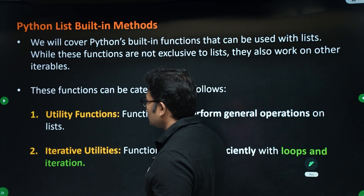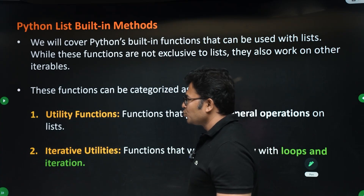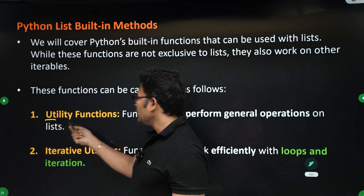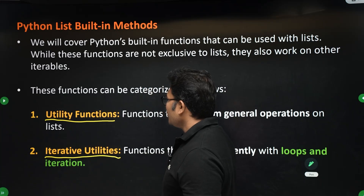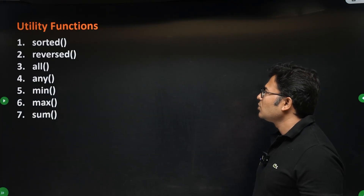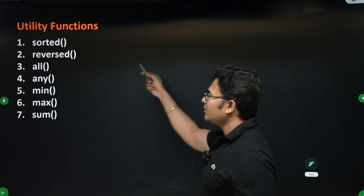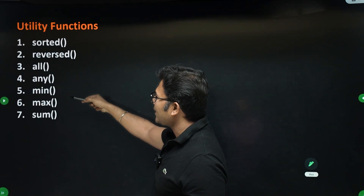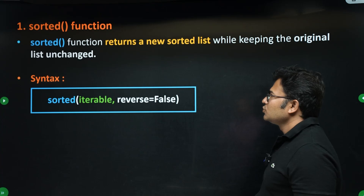We are going to classify the built-in methods into two types: one is utility functions and the other is iterable utilities. The utility functions we'll cover are: sorted, reversed, all, any, min, max, and sum.